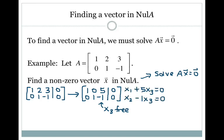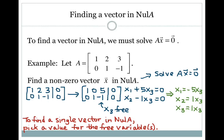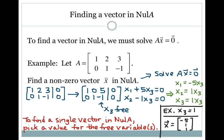Writing the solution: from row one, X1 plus 5X3 equals zero; from row two, X2 minus X3 equals zero. This gives X1 equals negative 5X3, X2 equals X3, and X3 equals X3 — we always set the free variable equal to itself. To find a single vector in the null space, I pick a value for the free variable. Setting X3 equals 1 gives the solution X equals negative 5, 1, 1.